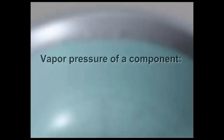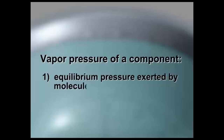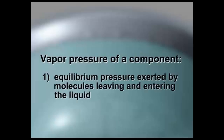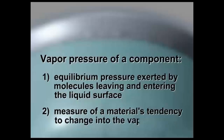The vapor pressure of a component is the equilibrium pressure exerted by molecules leaving and entering the liquid surface. In other words, vapor pressure is a measure of the tendency of a material to change into the vapor state.